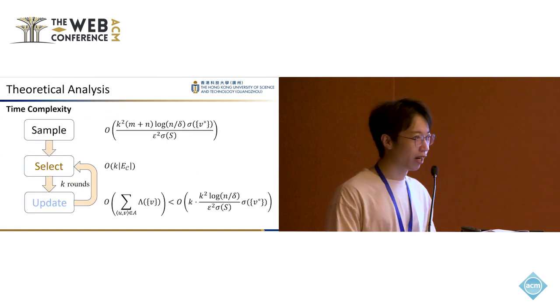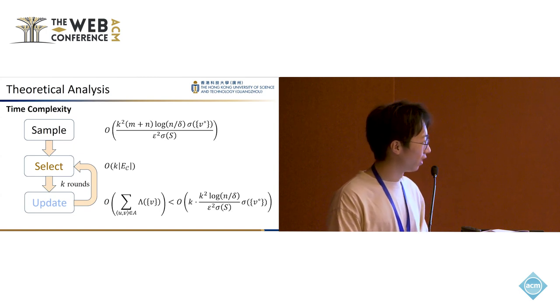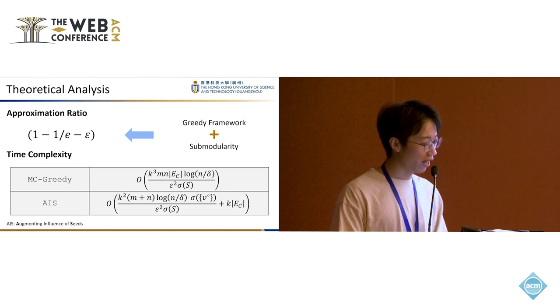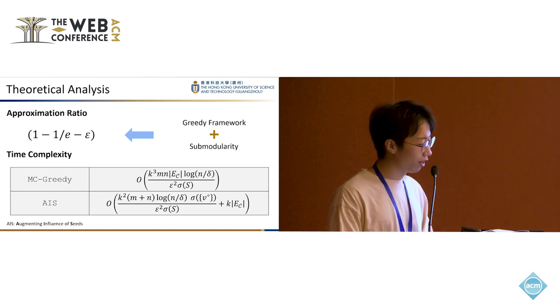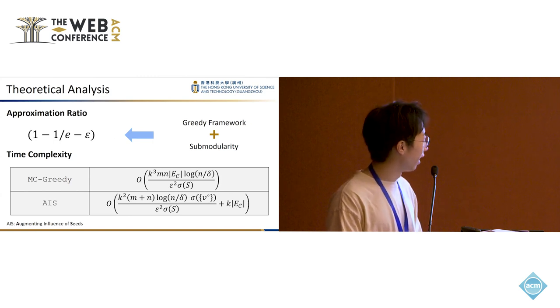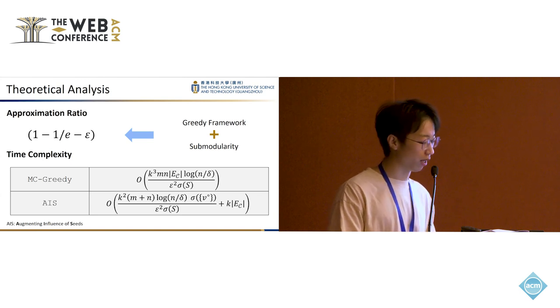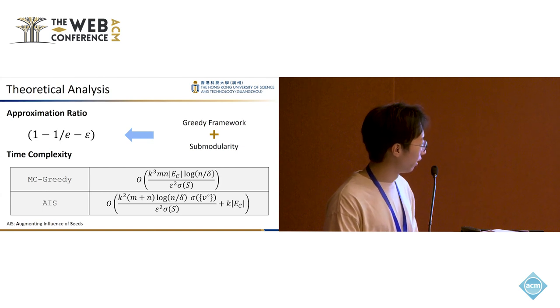We name our algorithm AIS, meaning augmenting the influence of seeds. The overall framework is very simple. You first do a large number of sampling and then you just select and update. The theoretical time complexity of each part is given here. With the greedy framework and submodularity property of this problem, we can get an approximation ratio of 1 minus 1 over e minus epsilon. The previous mentioned greedy framework instantiated with Monte Carlo simulations has such a form of time complexity, and we can see that our algorithm AIS is far better than it.